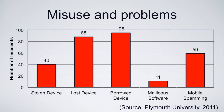Going back to our survey from Plymouth last year, malicious code is by far the least experienced by respondents of the categories — have you experienced this type of problem or potential threat with your mobile device? Very few — and this is number rather than percent — only 11 respondents out of a couple of hundred or so had experienced malicious software on their device.